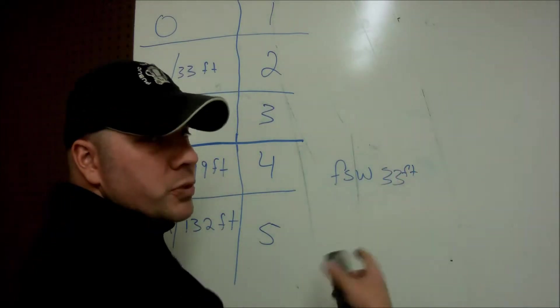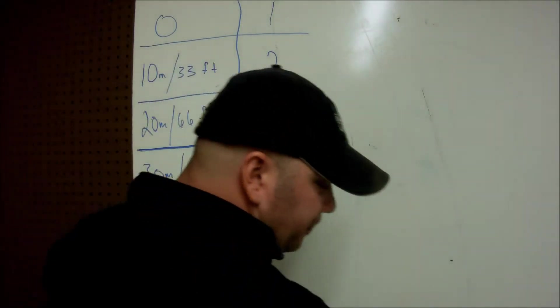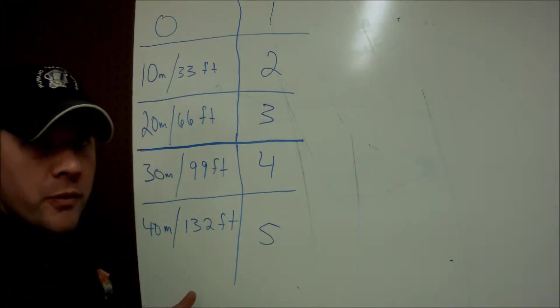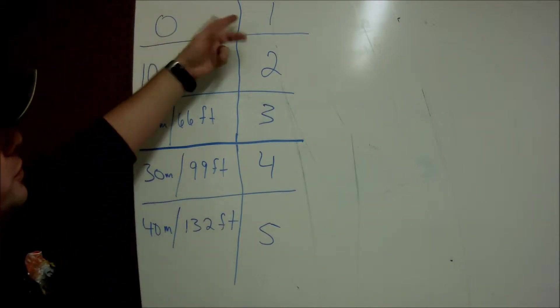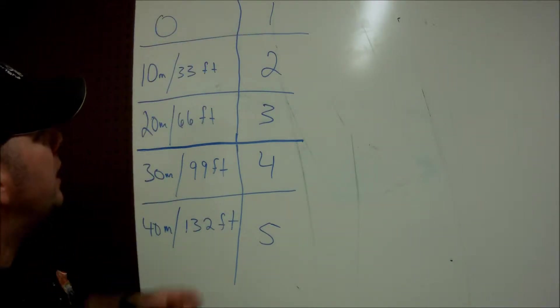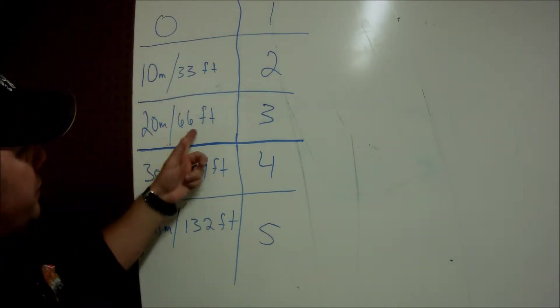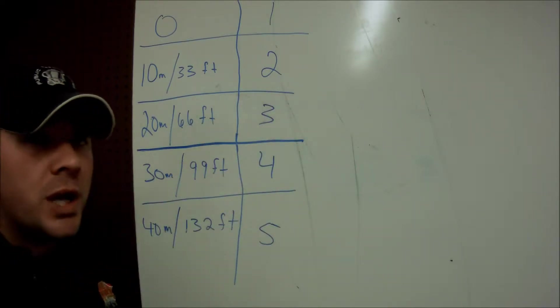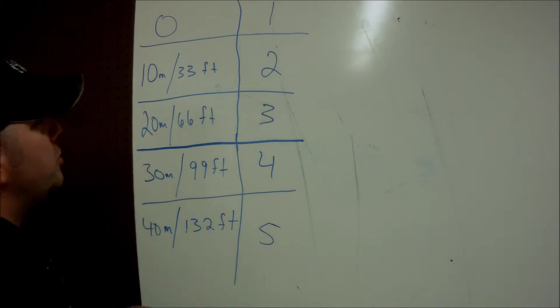You just got to make sure you use whichever one we're talking about. So if we look at the atmosphere pressure chart here, we all remember from the open water class, at the surface we're still under one atmosphere of pressure. Every 10 meters or 33 feet that we go down, we're going to go through a new atmospheric pressure.